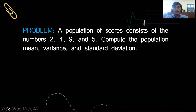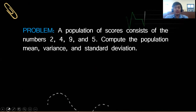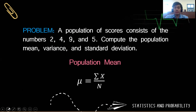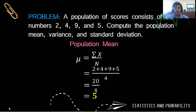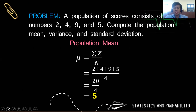Let's have this problem. A population of scores consists of the numbers 2, 4, 9, and 5. Let's compute for the population mean, the variance, and the standard deviation. For the population mean, we use the formula mu is equal to the summation of x over n. So that is 2 plus 4 plus 9 plus 5 divided by 4, giving us 20 over 4. So our population mean is 5.